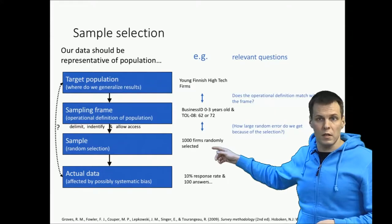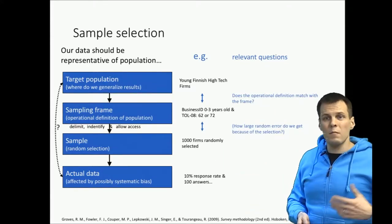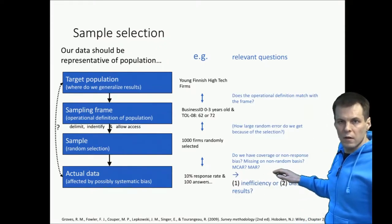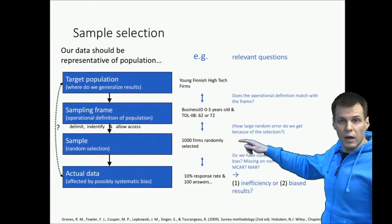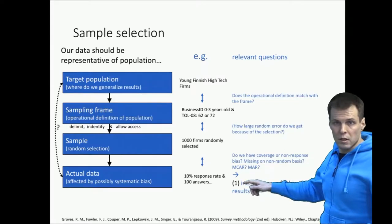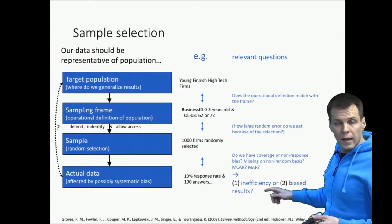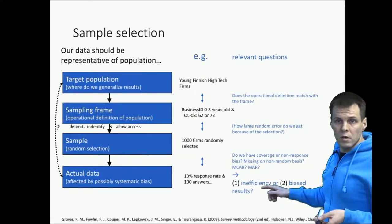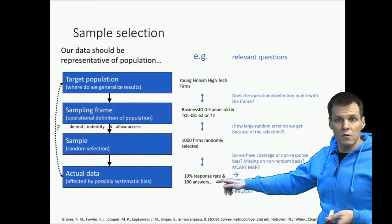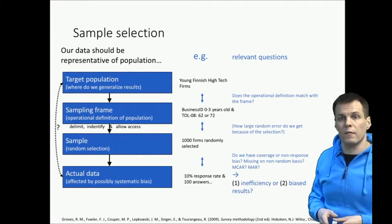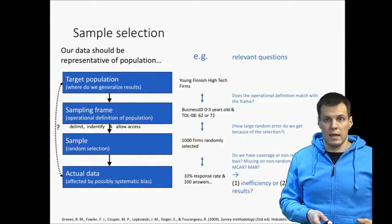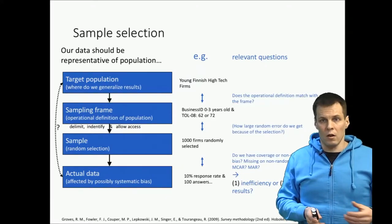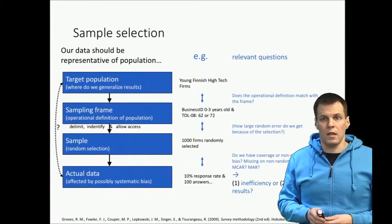The most problematic part is that the companies who decide to respond may not be randomly chosen. If a random 10% respond, that only means we have inefficiency — increasing sample size would make our estimates more precise, but that's it. A more problematic condition occurs if these 10% are chosen systematically, because that leads to biased results. For example, if our survey was about innovativeness and those companies that are more innovative are more likely to participate, then any regression analysis involving innovation as a dependent variable would produce biased results.